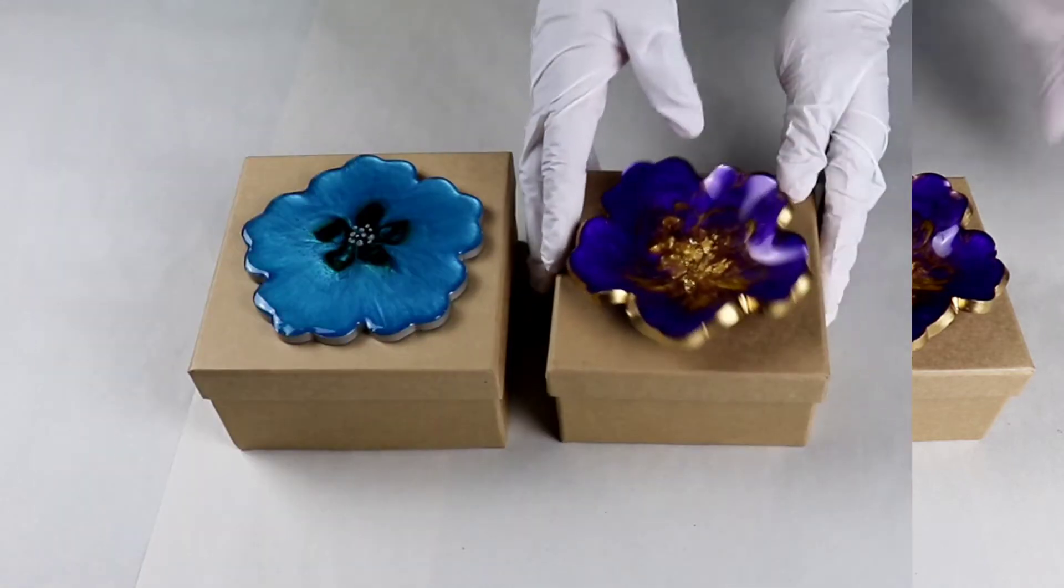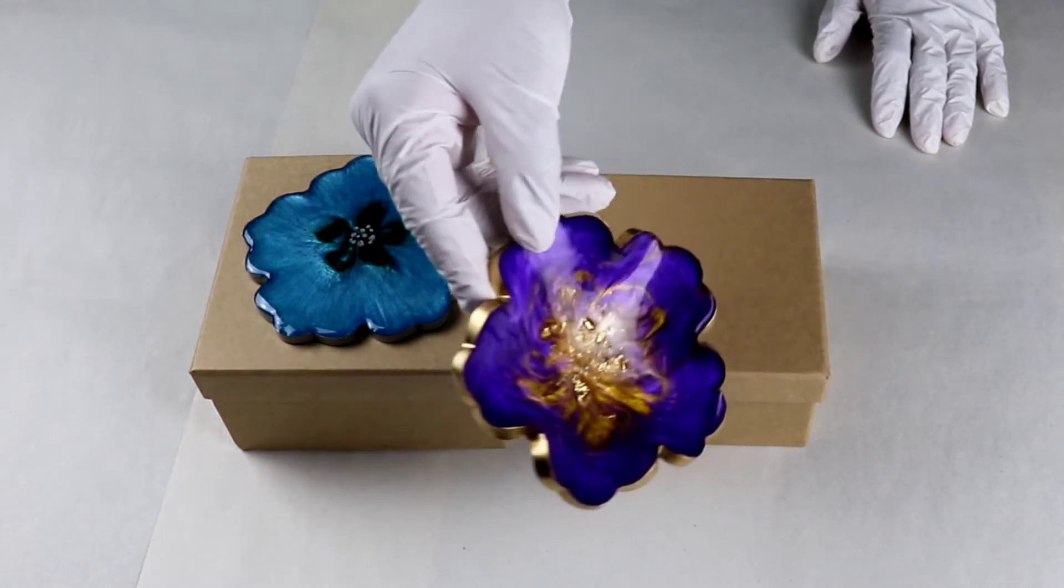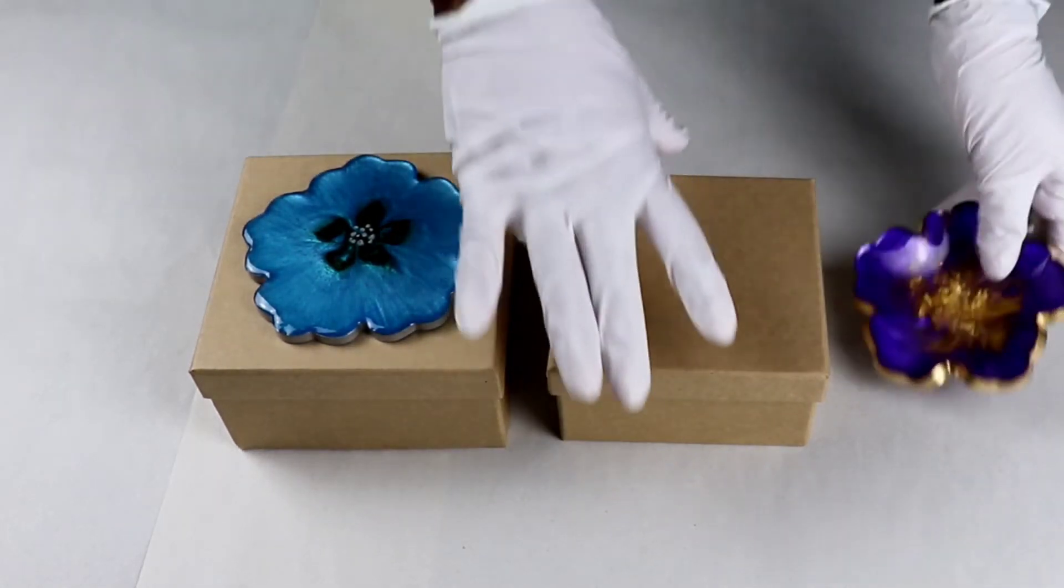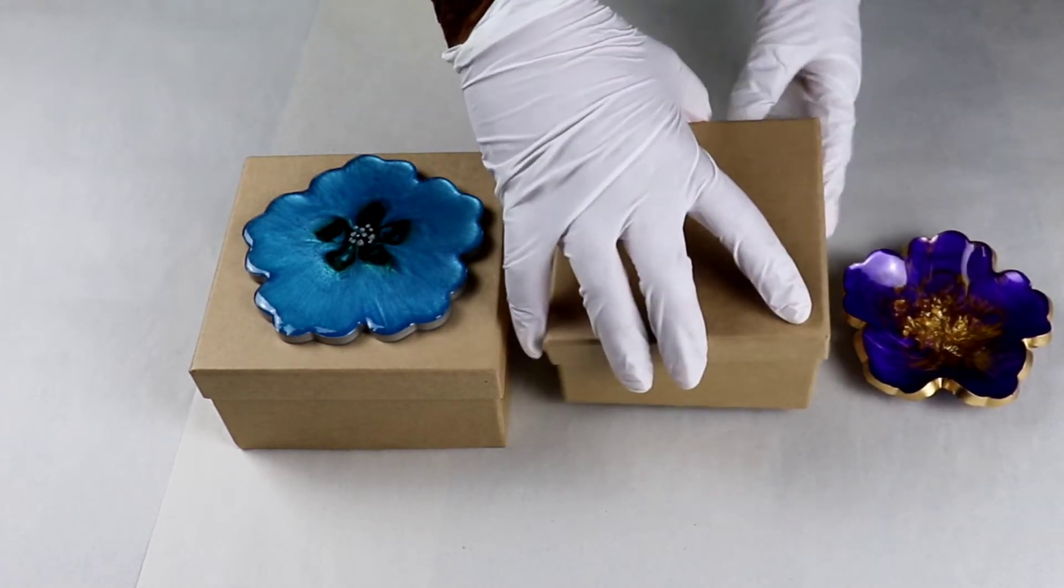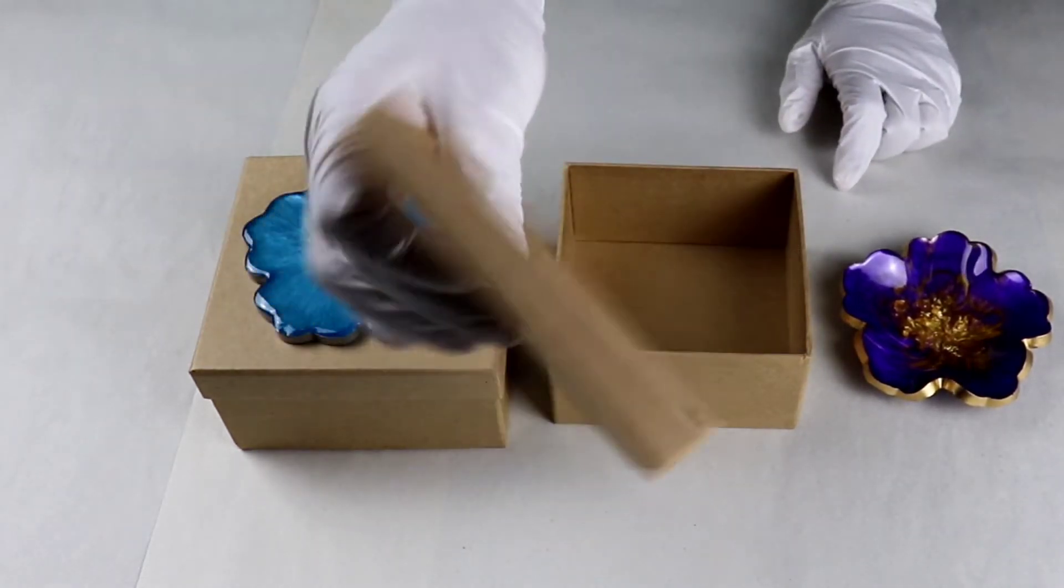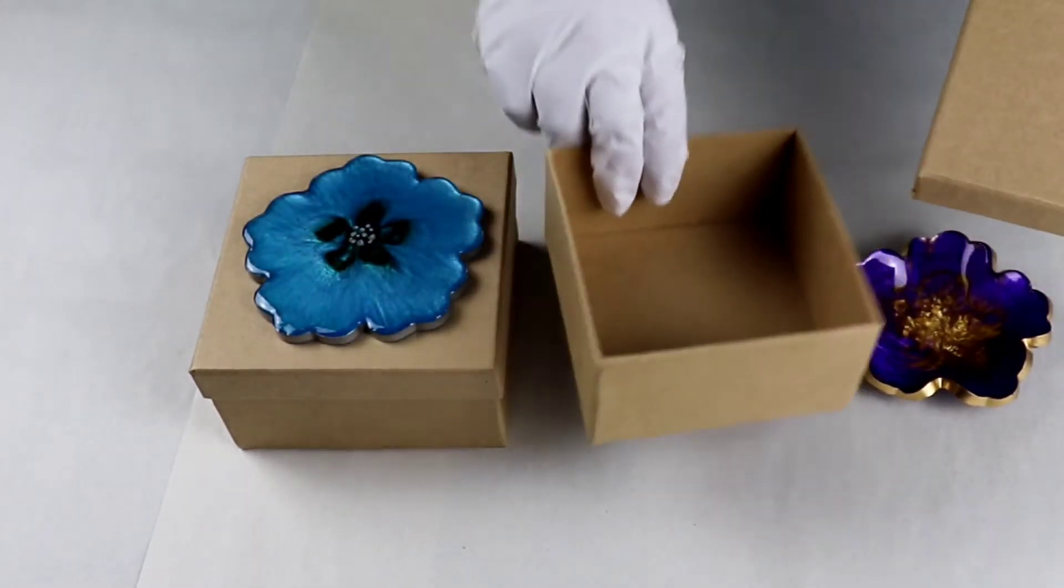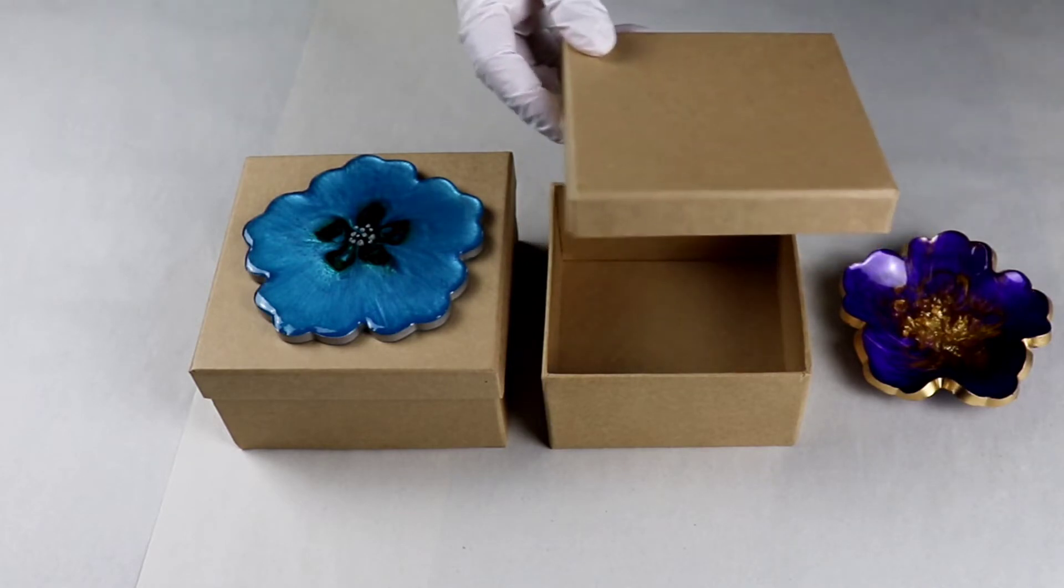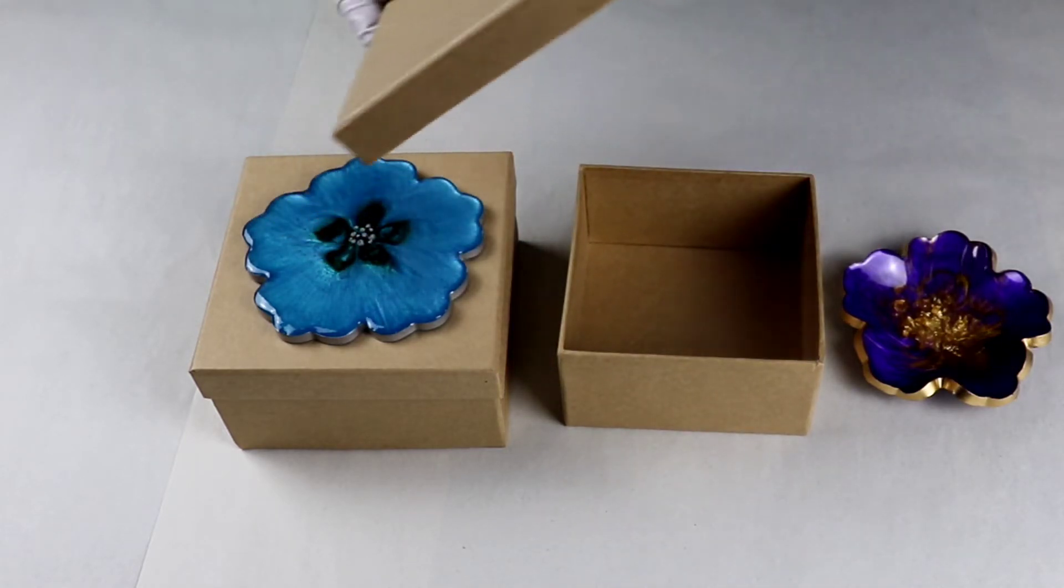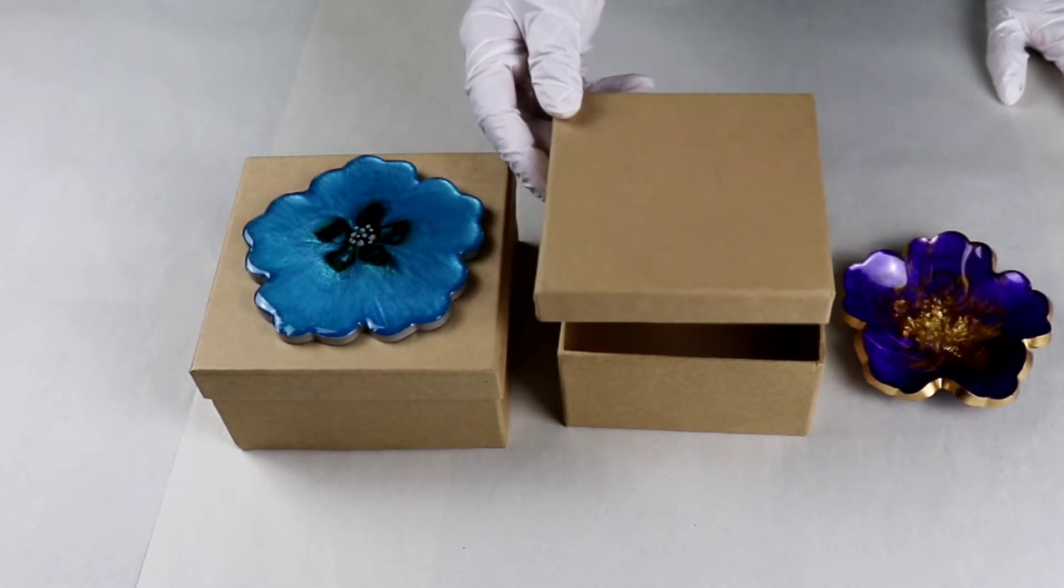This is another small trinket dish that I created and I'm going to do a square box this time. This is just a regular cardboard box, plain, but when you add something on top of it, it just adds your artistic touch and personalizes it a little bit more.